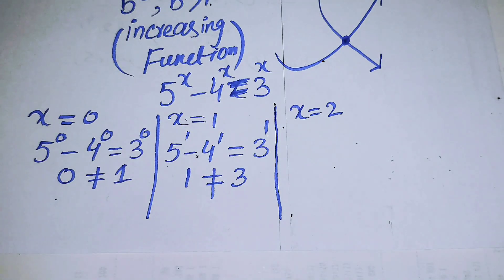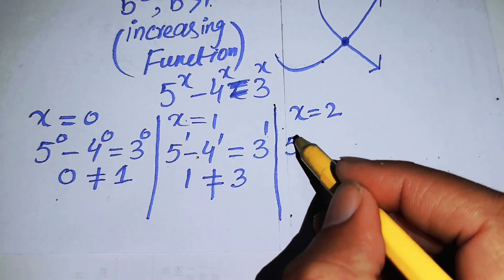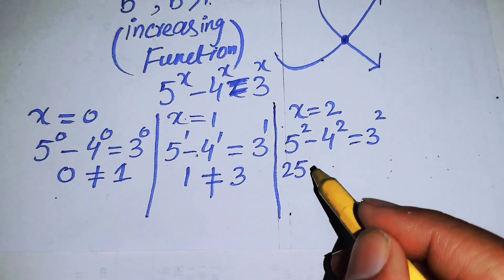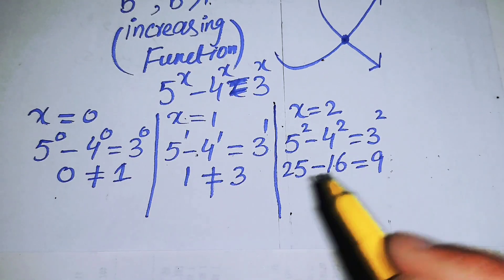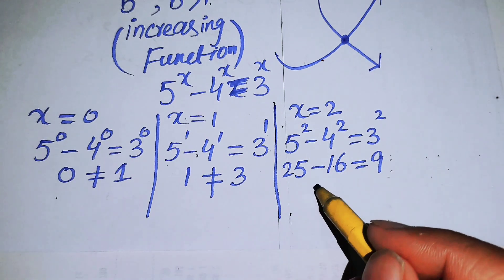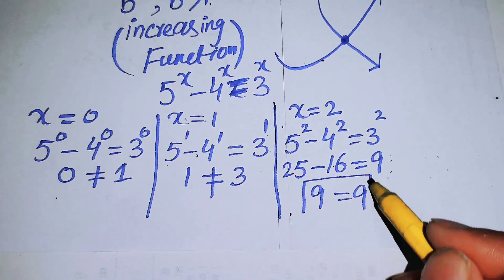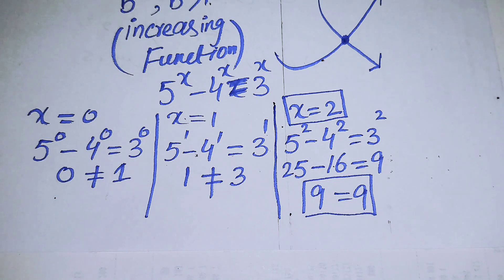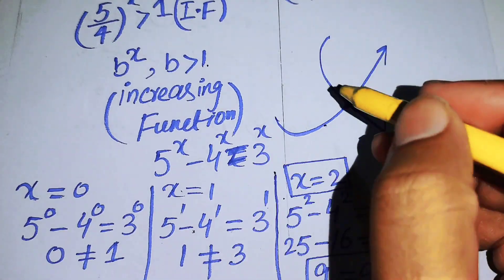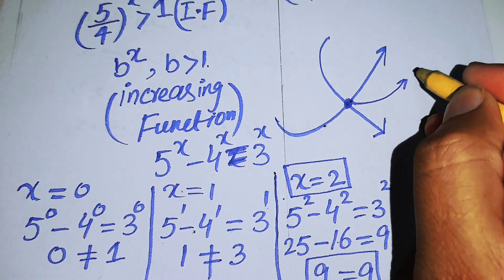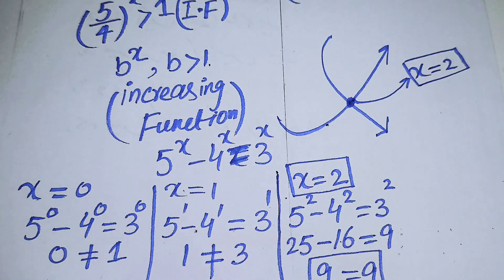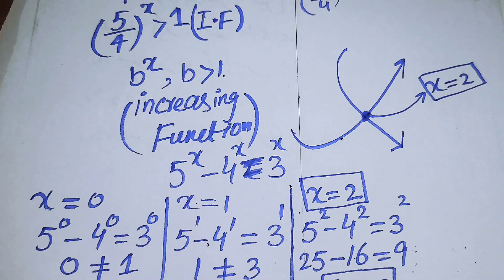Now we check X equals 2: 5 squared minus 4 squared equals 3 squared gives 25 minus 16 equals 9. And indeed 25 minus 16 equals 9, so X equals 2 satisfies the equation. Therefore X equals 2 is the unique solution of this problem.